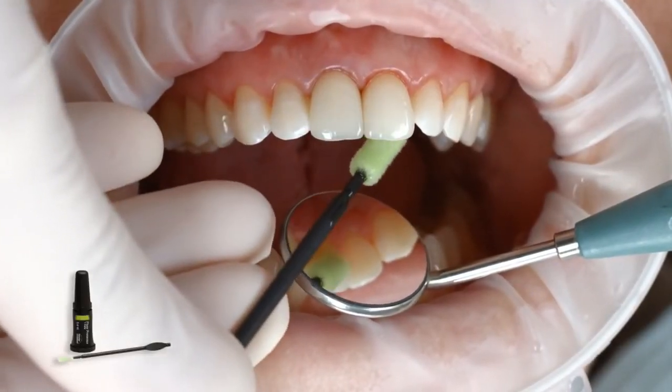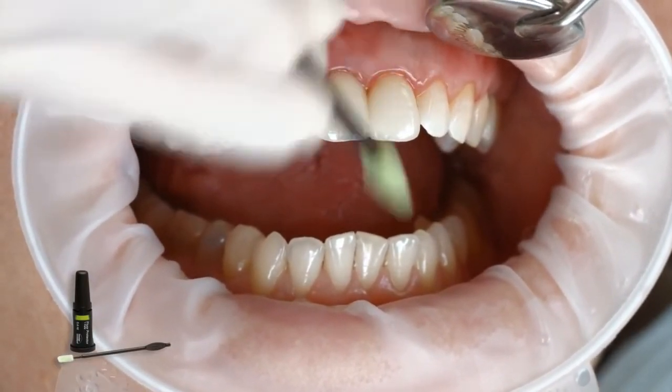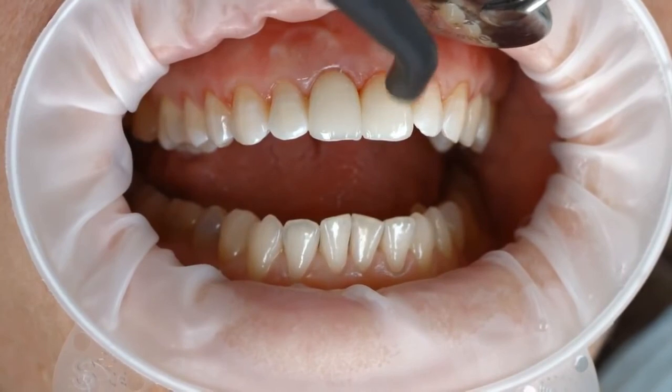As a final step, apply a thin layer of Floor Protection S with a Viva brush or a conventional brush. Use the air syringe to disperse and dry the varnish.